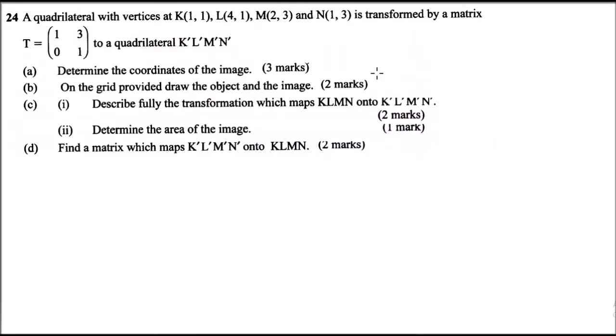Question number 24 is from matrices and transformation. We are told a quadrilateral with vertices at K(1,1), L(4,1), M(2,3), and N(1,3) is transformed by a matrix T = [1,3;0,1] to a quadrilateral K'L'M'N'. Part A asks us to determine the coordinates of the image. To determine that, we pre-multiply the matrix formed by the quadrilateral with the transformation matrix.